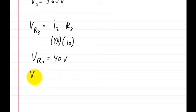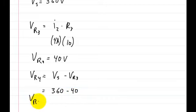And we can solve for the voltage on R4 just by saying the voltage of the supply minus the voltage of R3, because the voltage on R4 and the voltage on R3 have to equal up to the voltage on the supply. So this is going to be equal to 360 volts minus the 40 volts we just solved for. So the voltage on R4 is equal to 320 volts. So now we have that voltage.